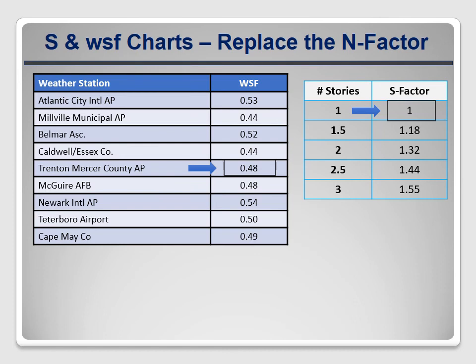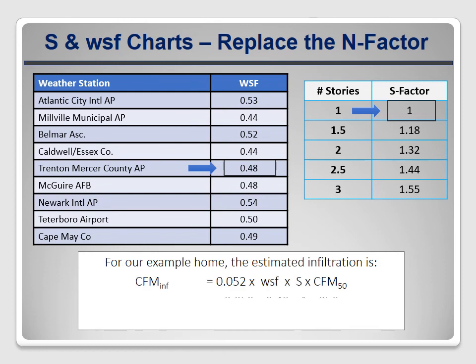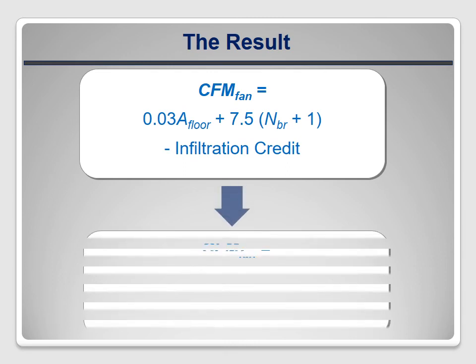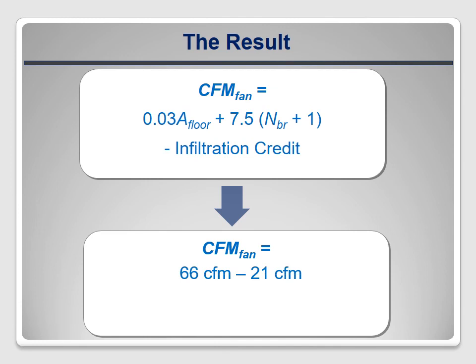Now we can plug those numbers into the equation. The estimated natural infiltration is 0.052 times the weather and shielding factor of 0.48, times the S factor of 1, times the blower door reading of 850 CFM. That gives us an estimate of 21 CFM — that's our infiltration credit. We now have all the pieces: the total desired ventilation rate of 66 CFM minus the infiltration credit of 21 CFM equals 45 CFM. We need to install a fan that can provide at least 45 CFM of continuous ventilation.